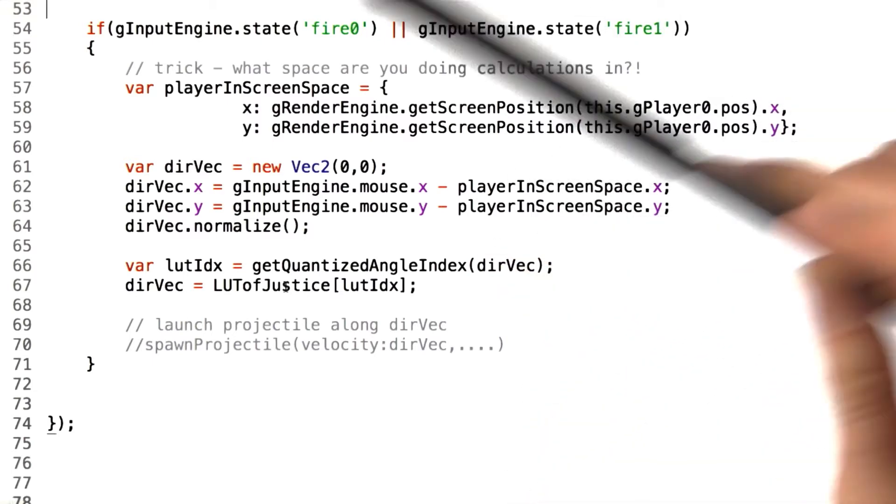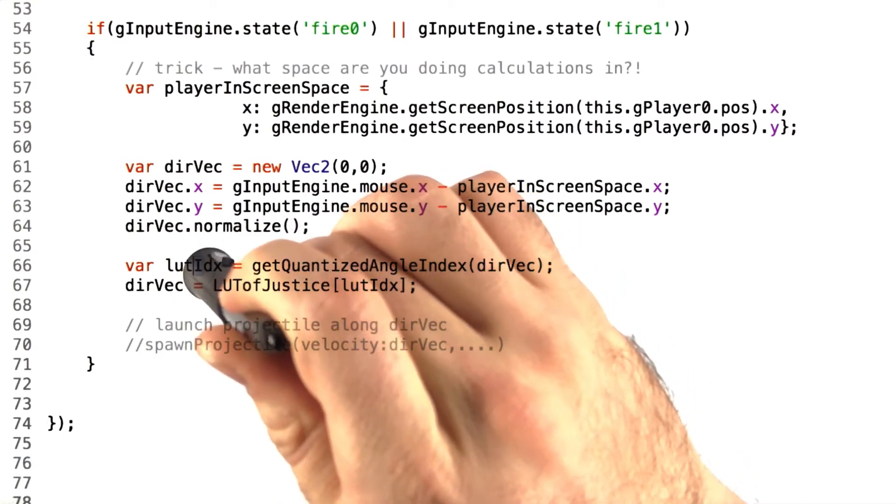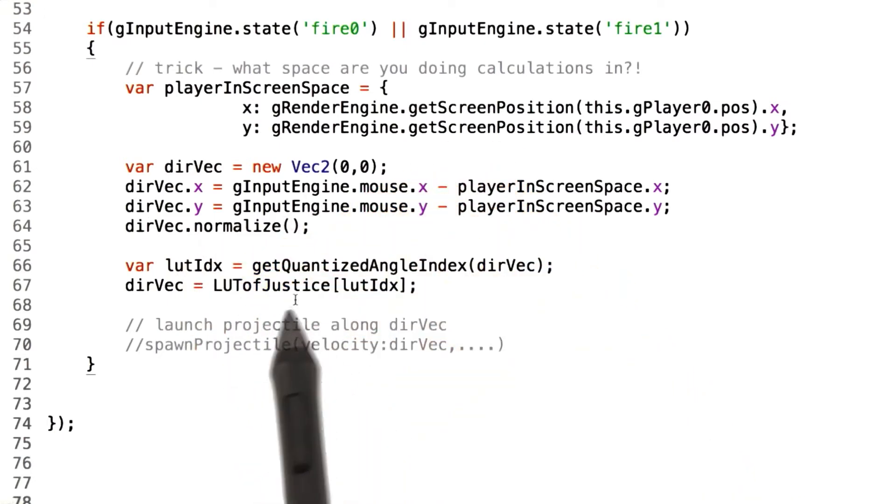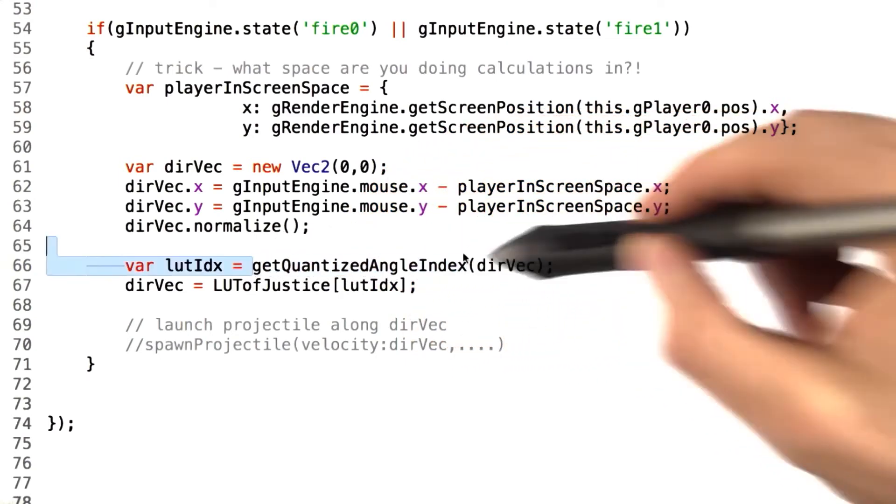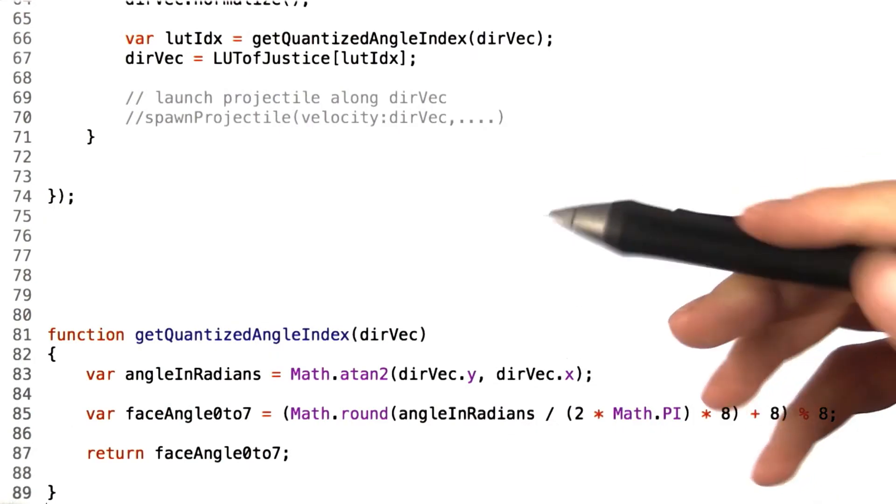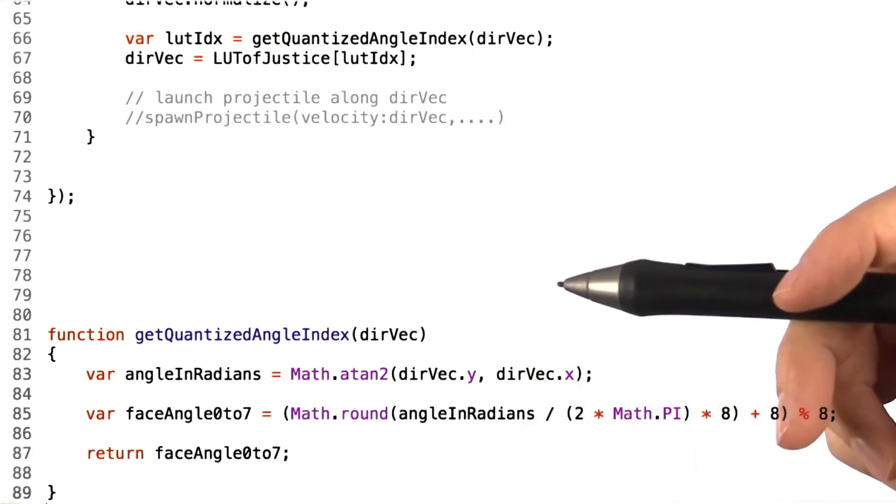Now, the magic sauce here is taking this arbitrary directional vector and turning it into a lookup index that we can then query against the lookup table. For us, we have a magical pixie of a function called getQuantizedAngleIndex. Now, I'll spare you most of the math that's inside of this function, because really, our intent is not to teach you trigonometry.